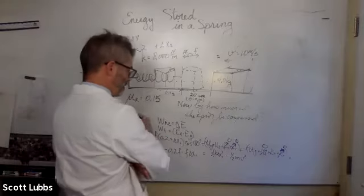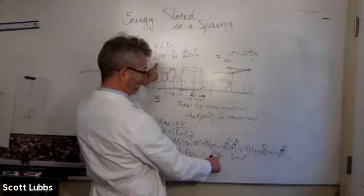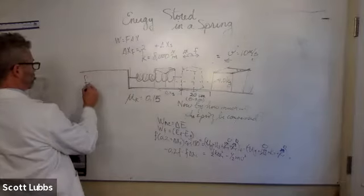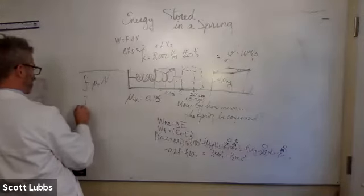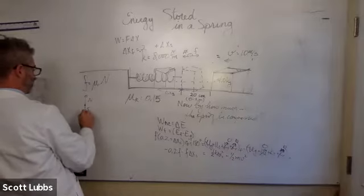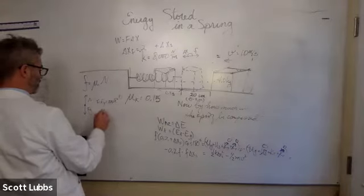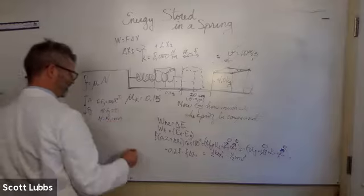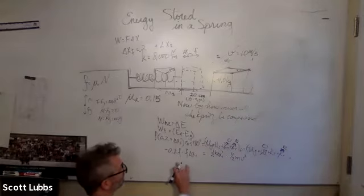K is that, don't know delta x. M is that, v initial is that. I gotta figure out what the force of friction is. Force of friction is mu times the normal force. Normal force - sum of the forces in the y direction is ma, that's zero. Normal force minus the force of gravity equals zero. The normal force equals the force of gravity, which is mg. Oh my gosh, push everything over to one side.